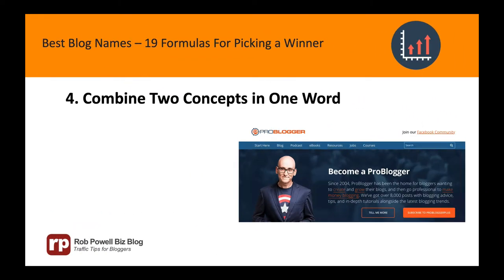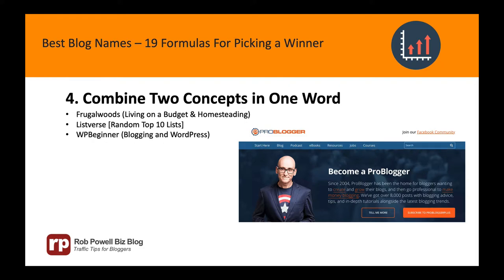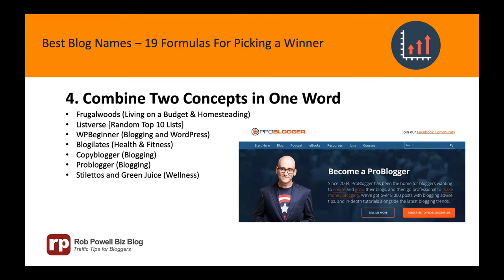Formula 4: Combine two concepts in one word. Take two words that sum up what your blog is about and put them together to make one word. For example: Frugal Woods, Listverse, WP Beginner, Blogilates, Copyblogger, Pro Blogger, Stilettos and Green Juice, The Blonde Salad, Barefoot Blonde, Yoga in Heels, and Zen Habits.